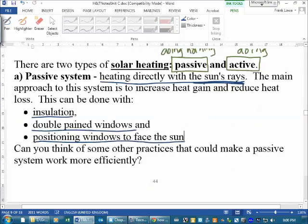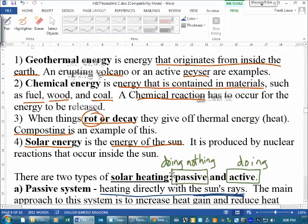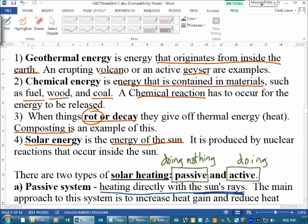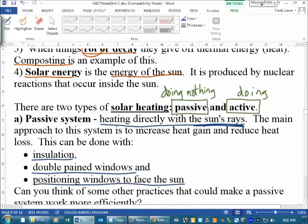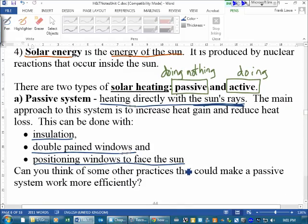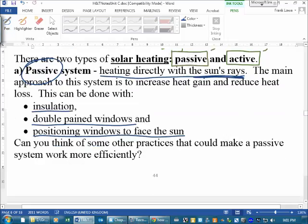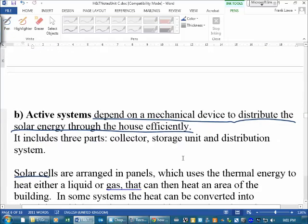So let's go back here. Four different sources of natural thermal energy or natural heat: geothermal, chemical, rot or decay, and solar energy. In solar energy, when we're using solar energy, we can use it in a passive way or we can use it in an active way.